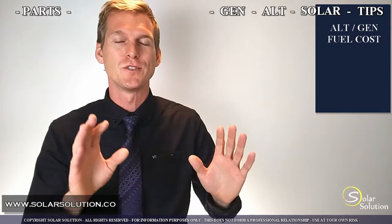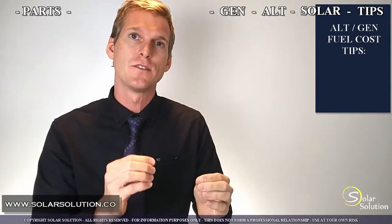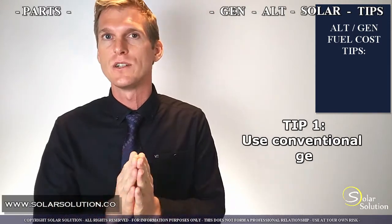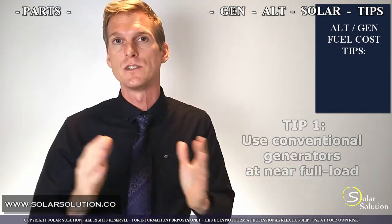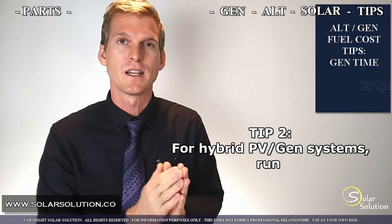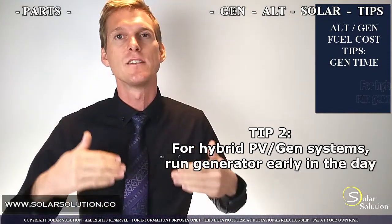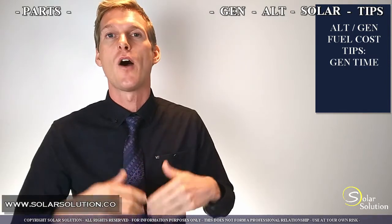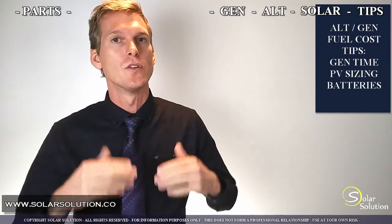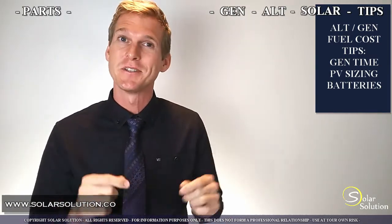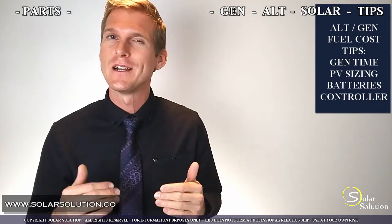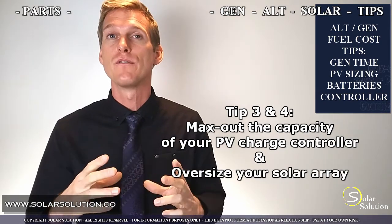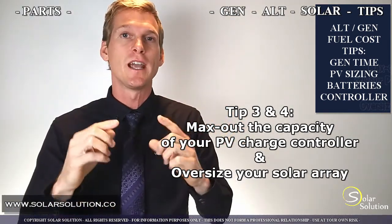Whichever power source or combination you go for, here are a few tips. If you're using a conventional generator, try to run it at nearly full capacity for best fuel efficiency, and if combining a generator with solar, use the generator early in the morning before 9 a.m. before solar kicks in and let the solar do the rest of the charging. When using solar panels, oversize your solar panel array and your battery bank — calculate exactly how many you need and then add a few more. For the solar charge controller, max out its capacity since they don't come cheap, and in certain situations oversizing the connected solar array can give you the best financial yield.